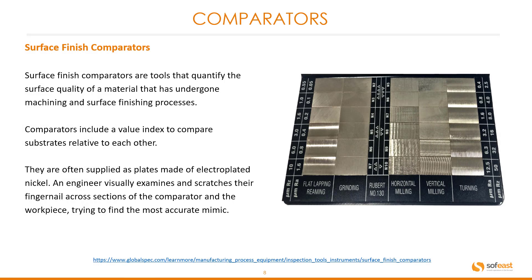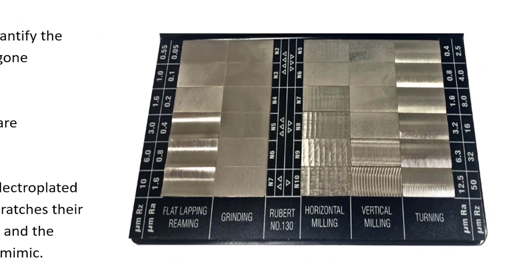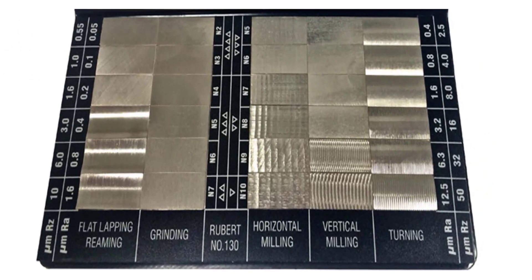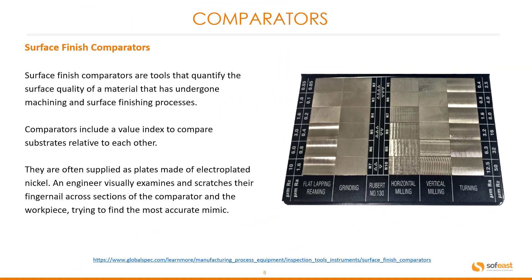Surface finish comparators are tools that quantify the surface quality of a material that has undergone machining and surface finishing processes. Comparators include a value index to compare substrates relative to each other. They are often supplied as plates made of electroplated nickel. An engineer visually examines and scratches their fingernail across sections of the comparator and the workpiece, trying to find the most accurate mimic.